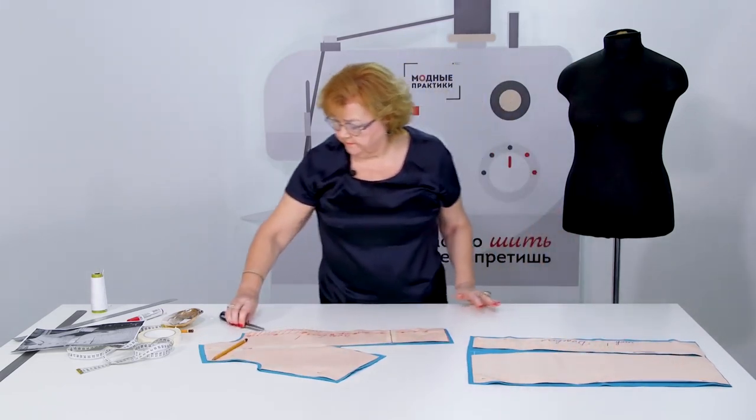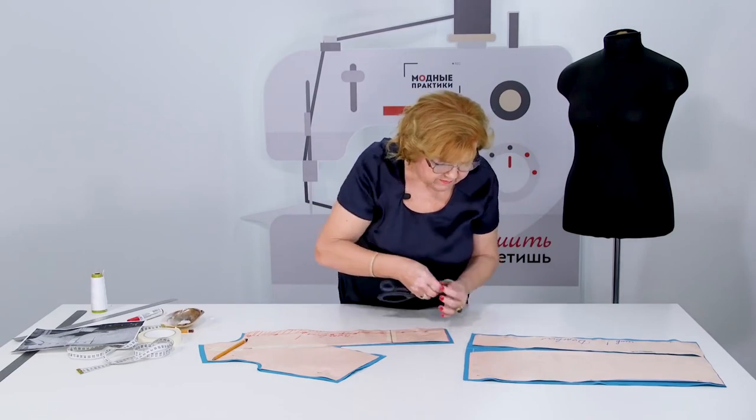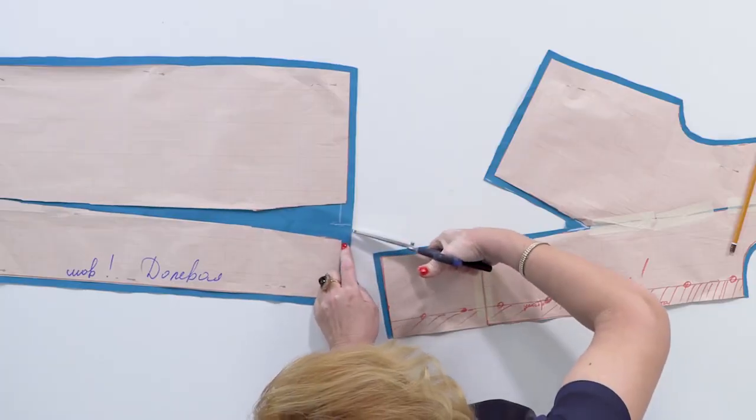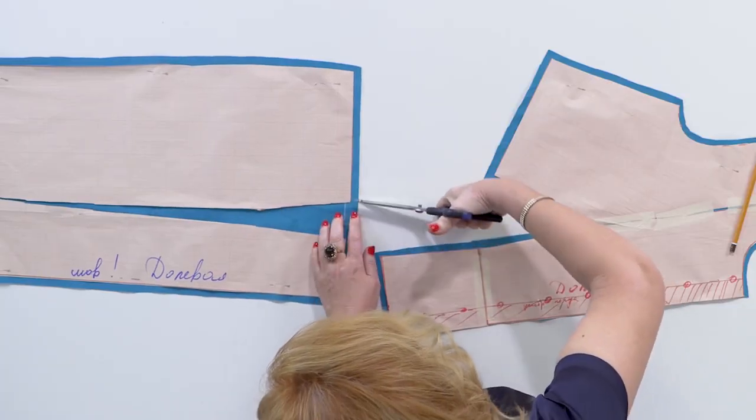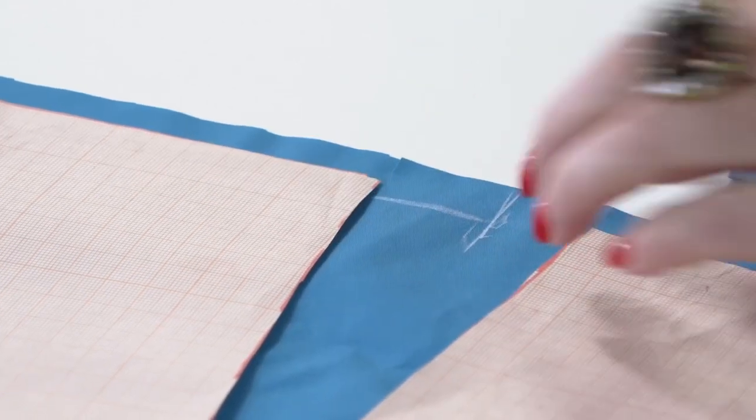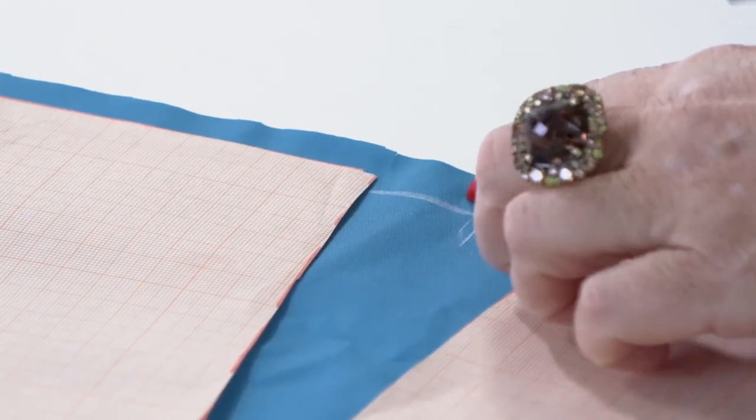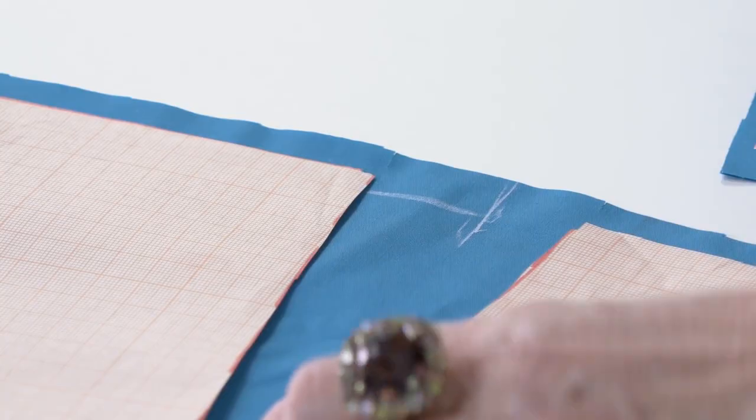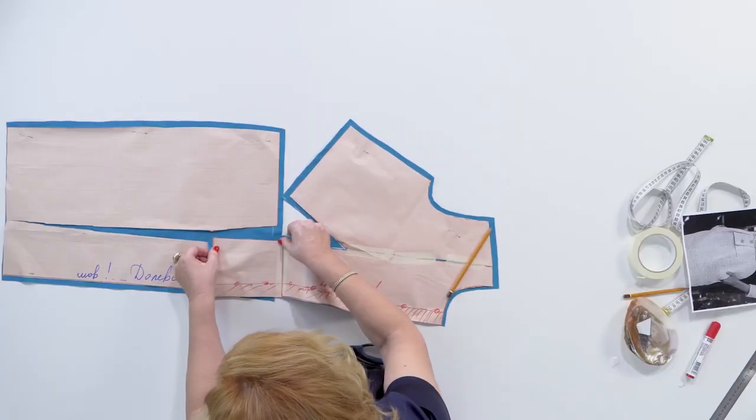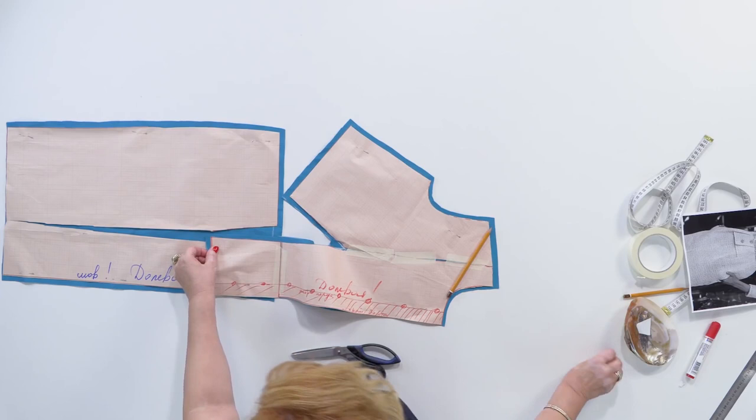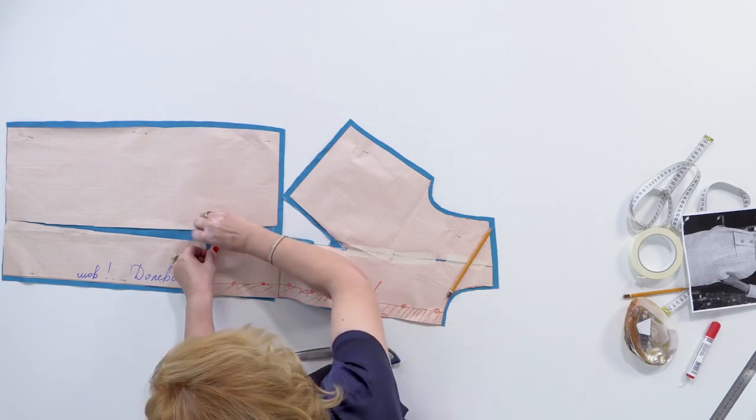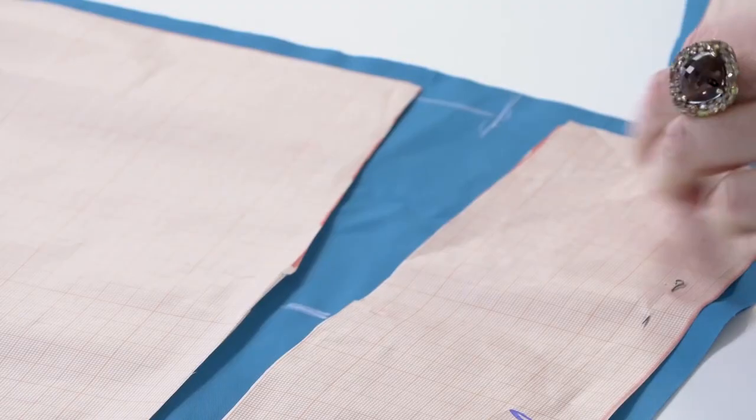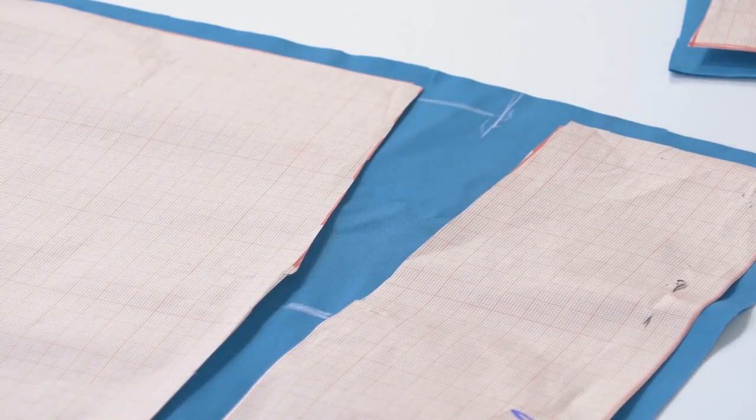That's it. I've cut the details. I need to make two tiny notches here to mark the dart legs. I'll also have to make a cut here in order to sew this detail. This is where it should be attached. I'll show you how to do it later. This is where I'm going to make a cut.